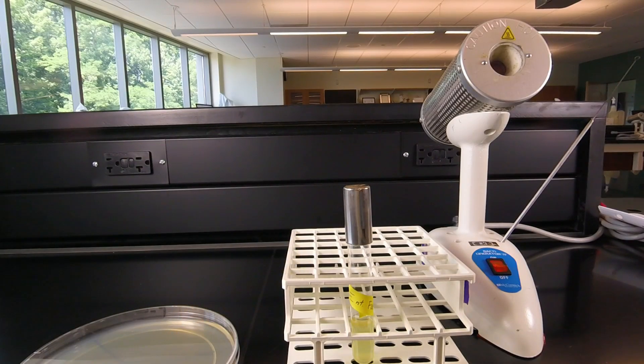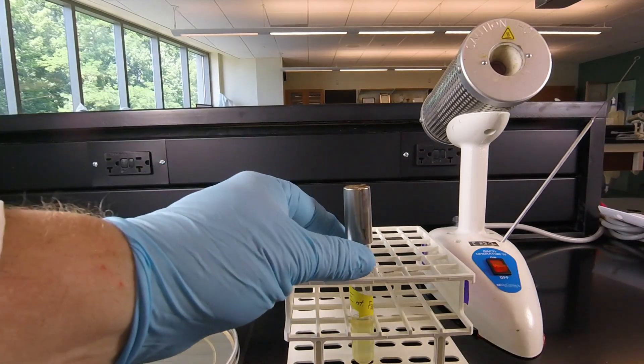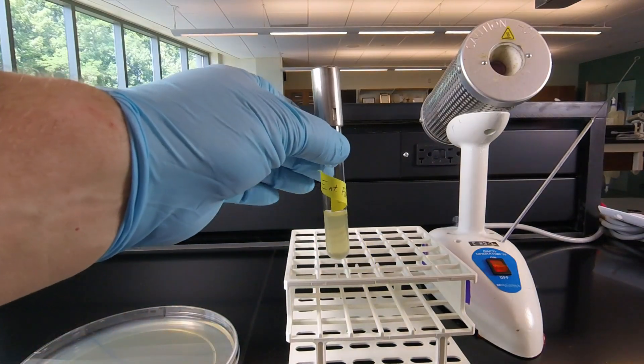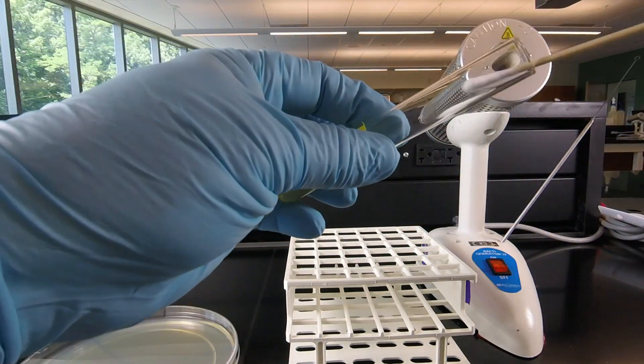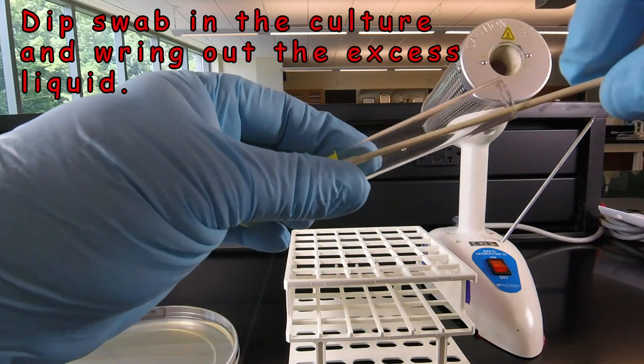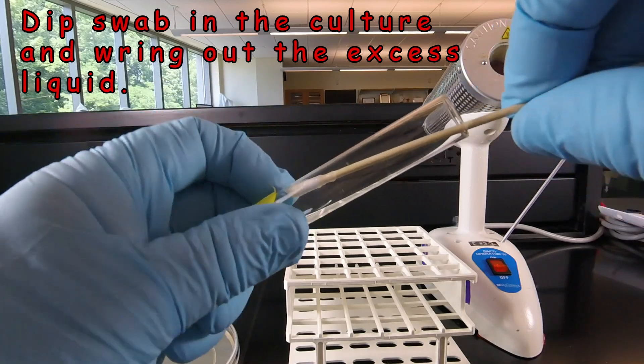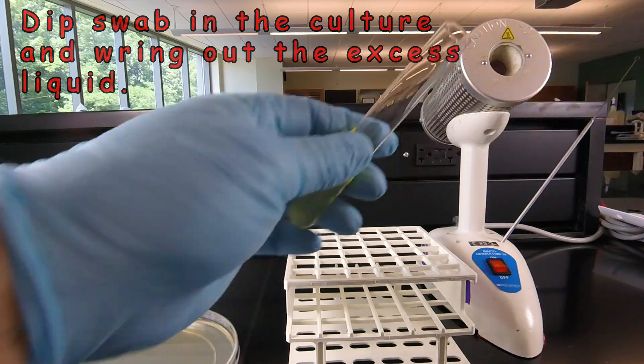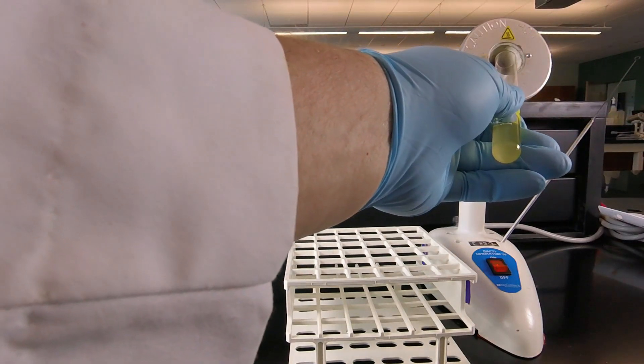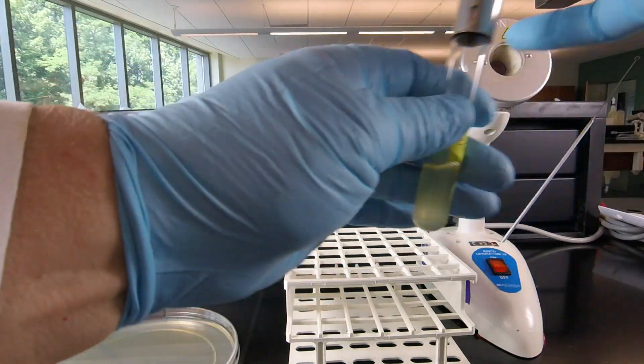So we're going to be using a swab for this. We're going to remove the inoculum by flaming the tube, putting a swab in, then we're going to wring the swab out against the inside of the tube to get rid of excess liquid, flame the tube, and replace the cap.